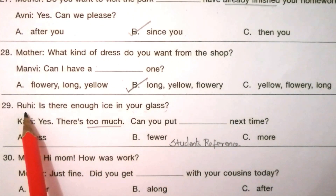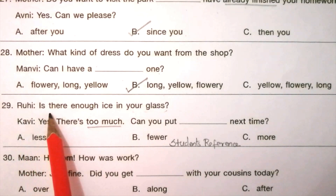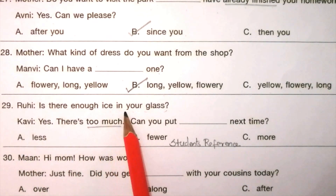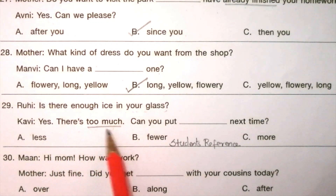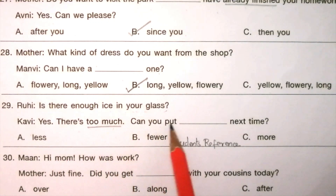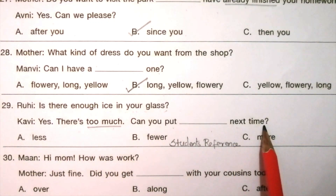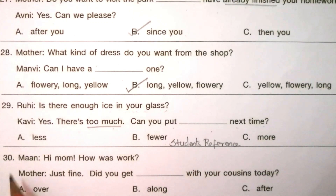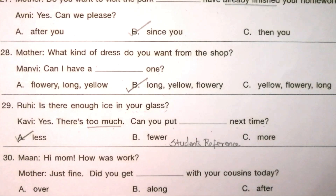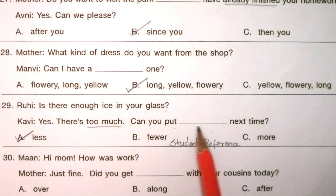Question 29 — Ruhi: Is there enough ice in your glass? Covey: Yes, there is too much. Can you put ___ next time? Options: less, fewer, more. The answer is A: less. Yes, there is too much. Can you put less next time?